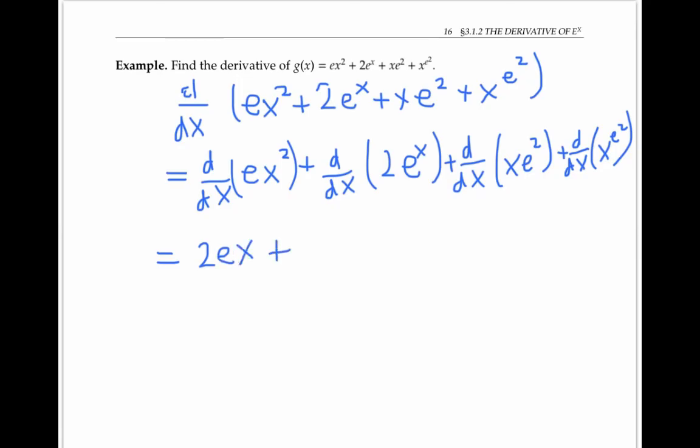Now for the second part, here I do have my e to the x function multiplied by two. So its derivative is just two times the derivative of e to the x, which is e to the x.